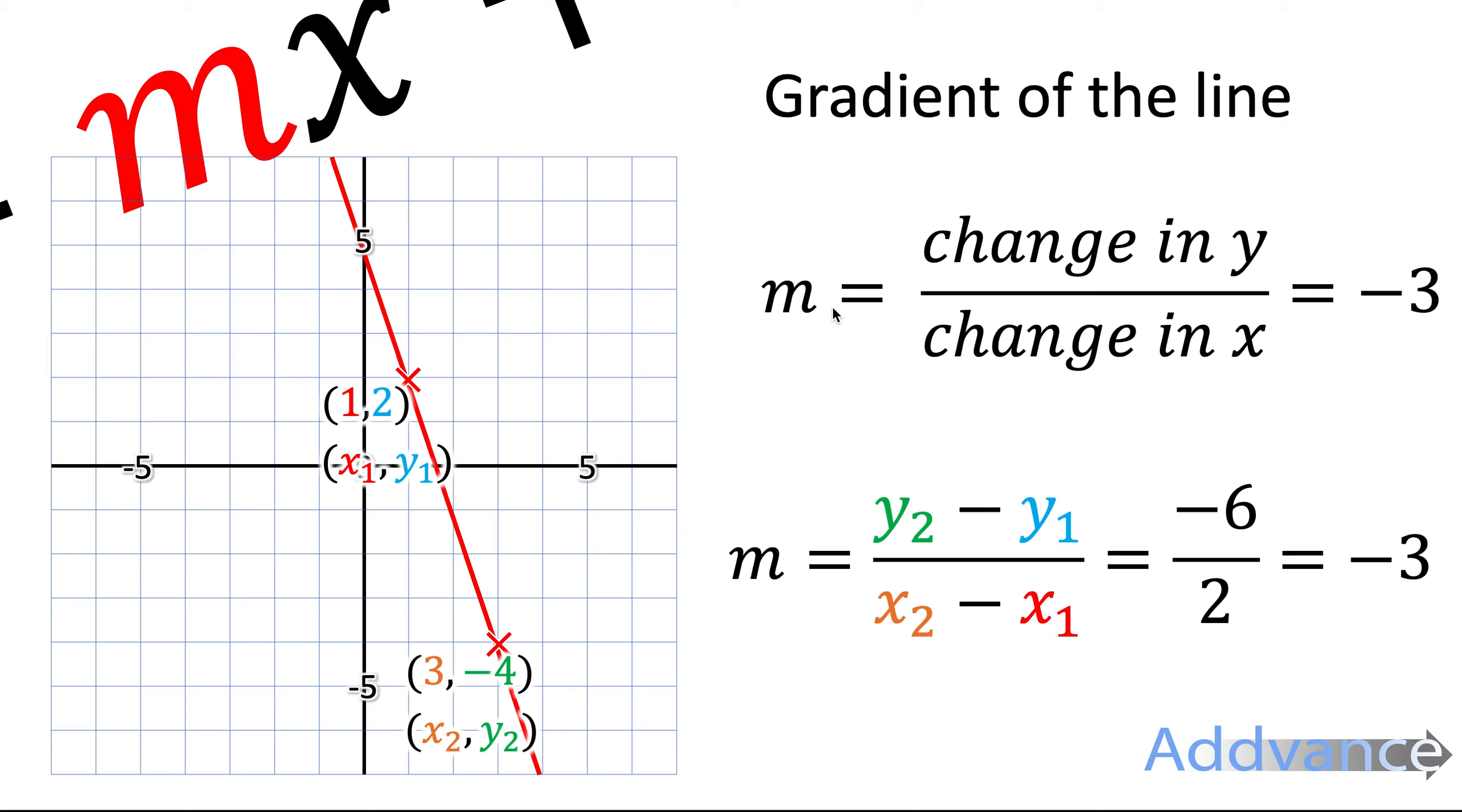All in all, normally, you will probably use the top equation if you're looking at a graph, so if you can see an example of it drawn for you. And you will use the bottom equation if you've got two pairs of coordinates, if you're given two coordinates on the line.